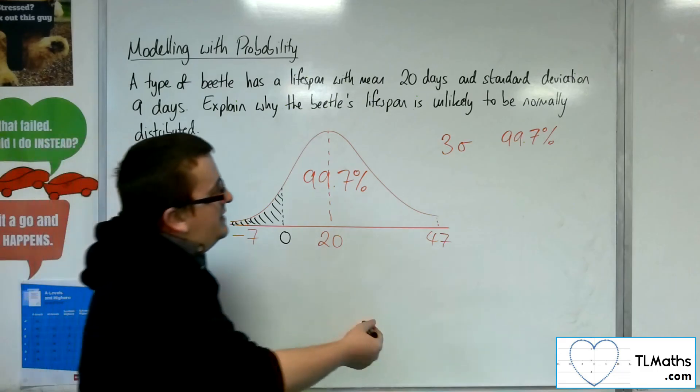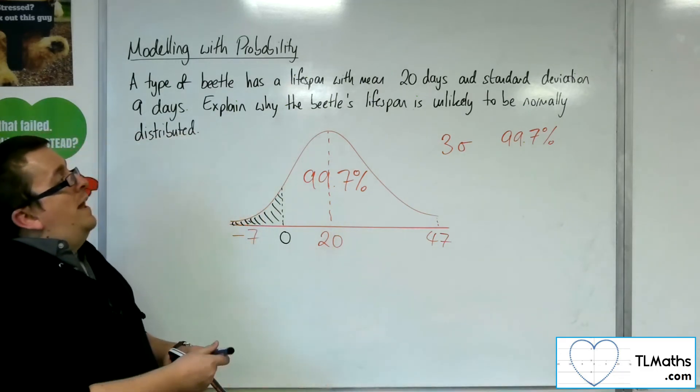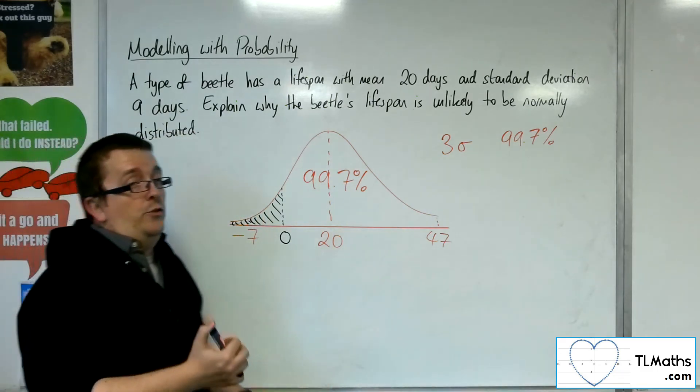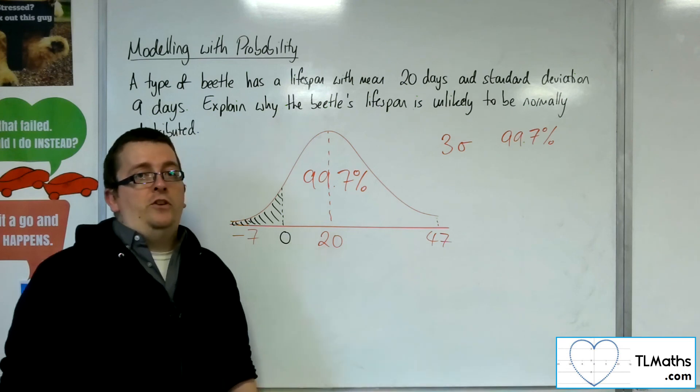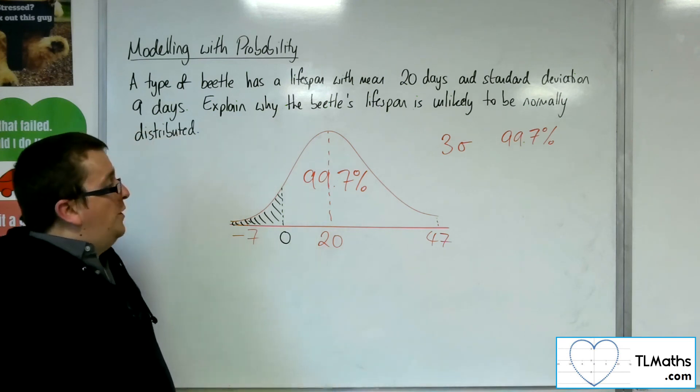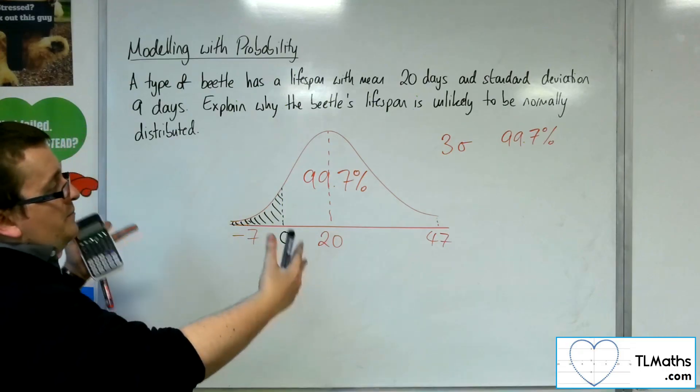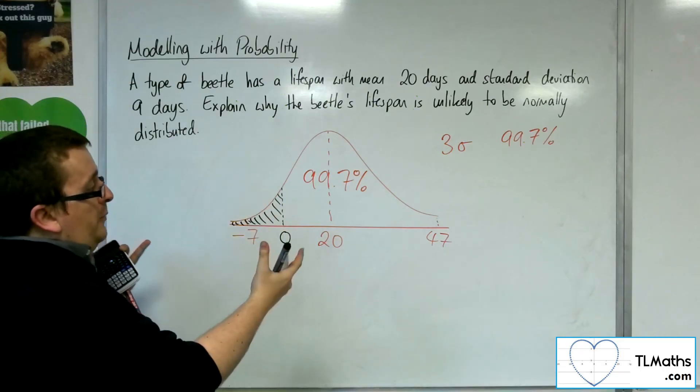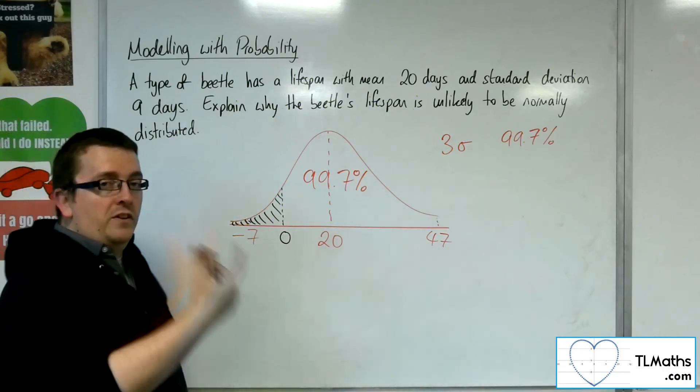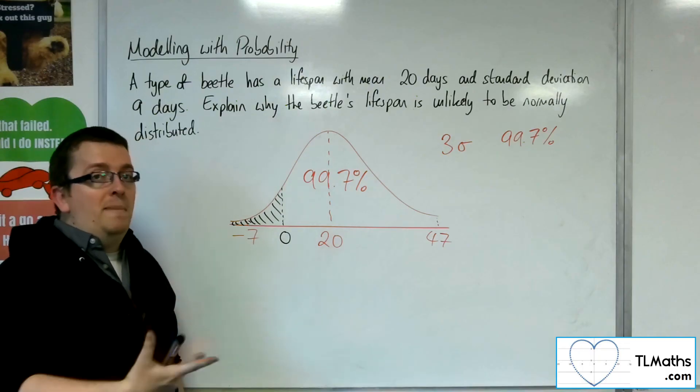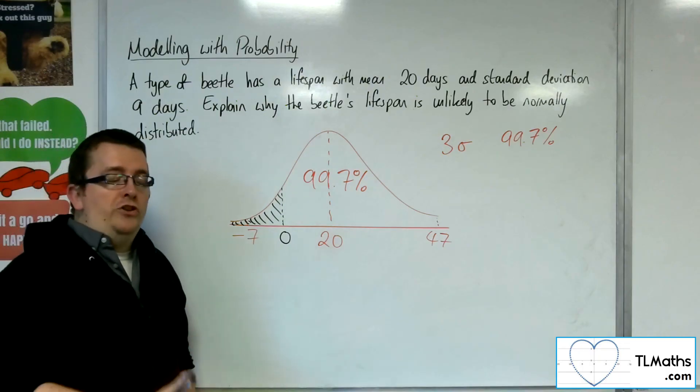And that makes no sense whatsoever. So in this case, it's unlikely that the beetle's lifespan can be modelled using a normal distribution, because you've got to look at whether the 99.7% three standard deviations either side of the mean actually makes sense given the context of the problem.